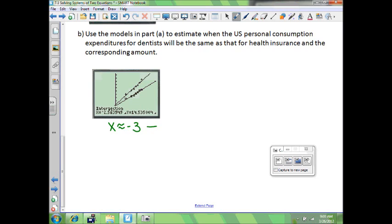So my intersection point will be about when X is negative 3. Well, that means 3 years before 1990. So that tells me sometime in the year 1987. That's when expenditures for dentists and health insurance will be about the same. And it's going to be about $14.5 billion.